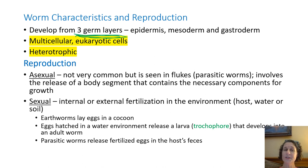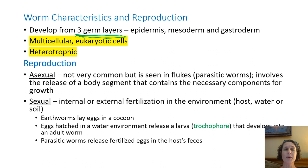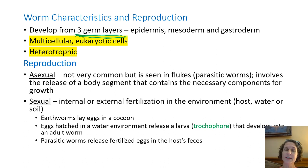Worms are animals, so multicellular eukaryotic cells are the big points there. They are heterotrophic — we'll talk more specifically in a few minutes about the parasites. They do have to eat other substances; they do not feed themselves.